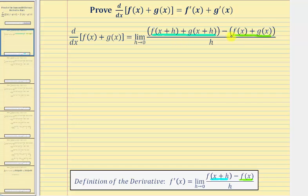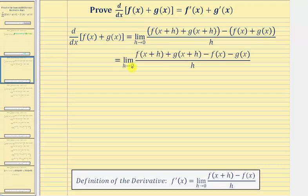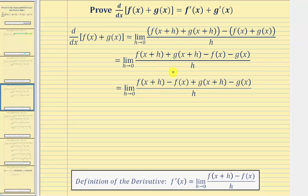Now for our next step, we want to clear the parentheses. If it's helpful, we can think of distributing a positive one here, and because of the subtraction, we would distribute negative one. So distributing positive one won't change anything, but here we're going to have minus f of x minus g of x. This gives us the limit as h approaches zero of this fraction. Now we're going to change the order of the terms in the numerator, writing the f's next to each other and the g's next to each other. So we'll write the numerator as f of the quantity x plus h minus f of x, and then plus g of the quantity x plus h minus g of x.